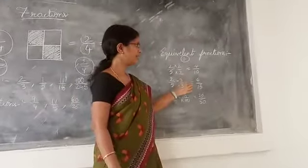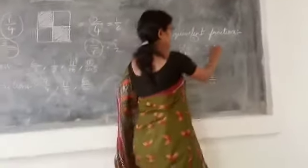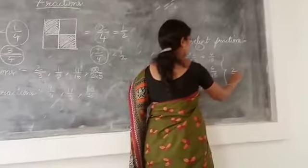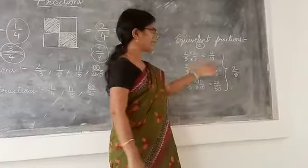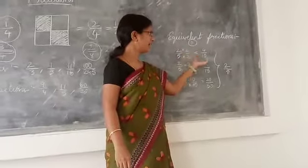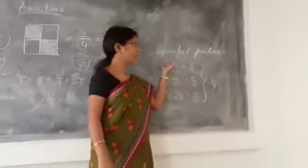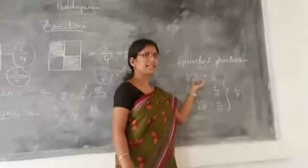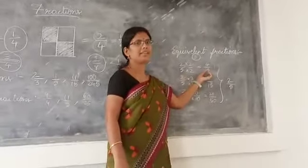These are equivalent fractions of 2 by 5. Here what we do here? Multiply with the same number. With numerator and denominator multiply with the same number. Then we get the equivalent fraction.